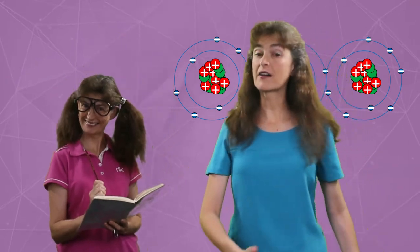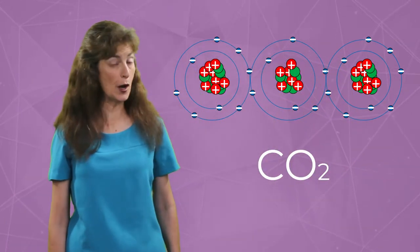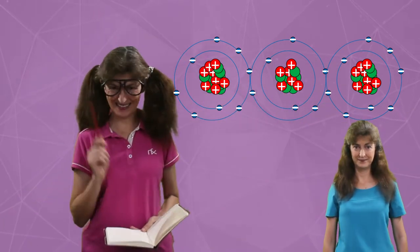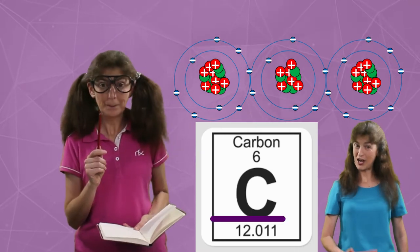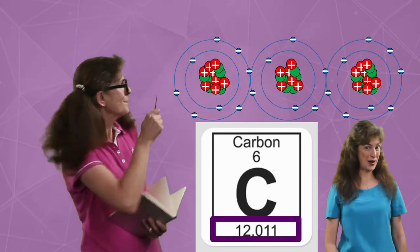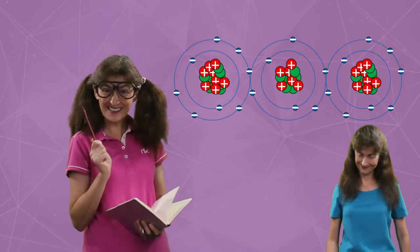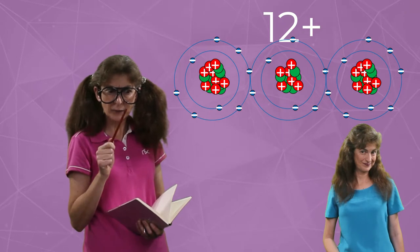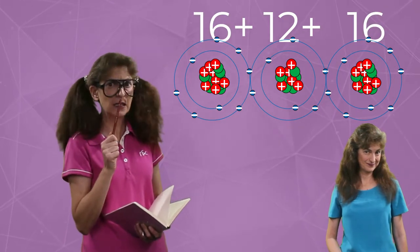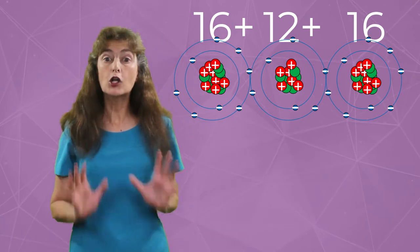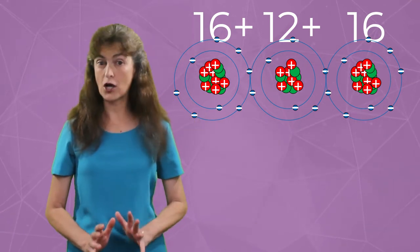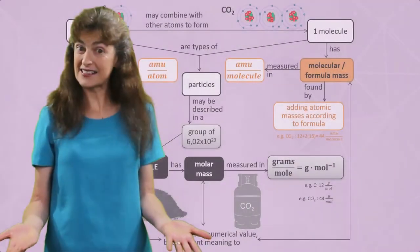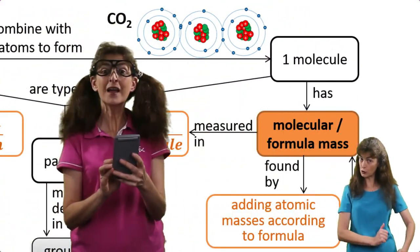Here's a sub-microscopic representation of a CO2 molecule. Count the nucleons in this picture. It's 12 in carbon, which also matches carbon's mass number on the periodic table, and 16 in each oxygen atom, matching oxygen's mass number. So that's 12 plus 16 plus 16. Here we are looking at carbon dioxide on the sub-microscopic level — 44. So what's the mass of one molecule of CO2? 44.